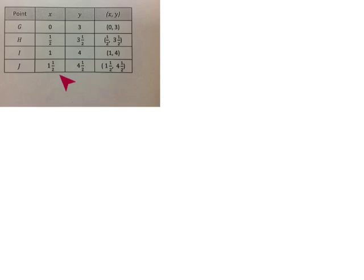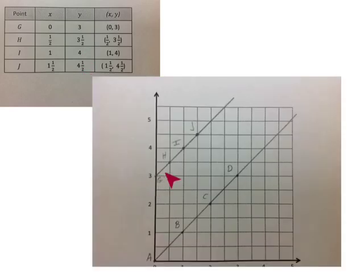Here we have another chart where x and y are not equal. We have x of 0, y of 3; x 1 half, y 3 and 1 half; x 1, y is 4. I'm seeing a pattern here where y is always 3 more than x. Here I've formed a line. I've plotted the points that were in our chart and they form another line, and they form a line because there's a pattern between x and y. That pattern is that y is 3 more than x.